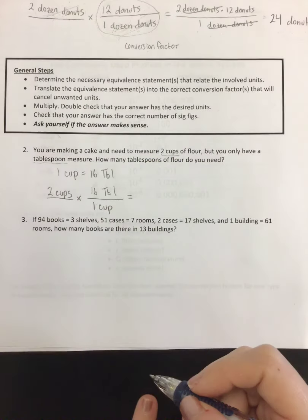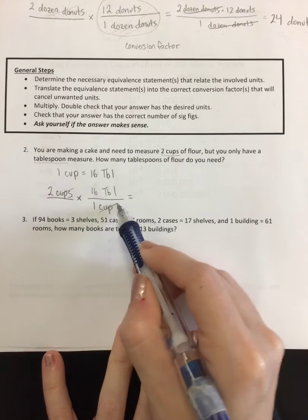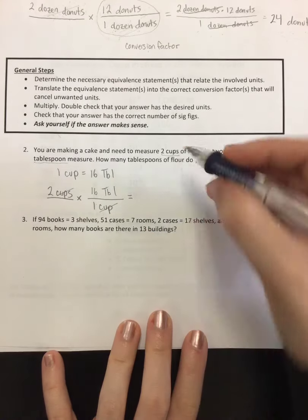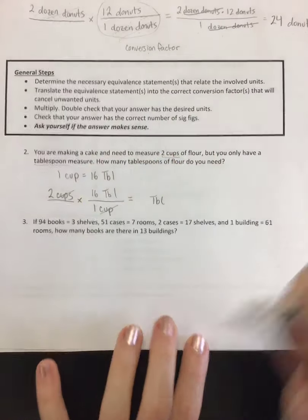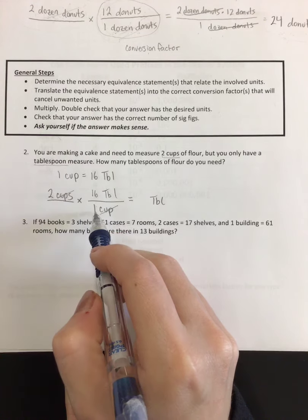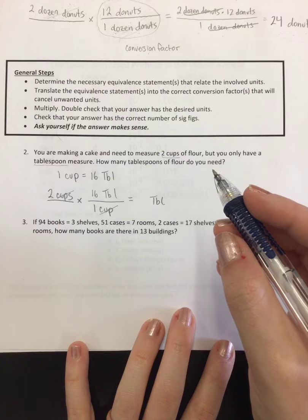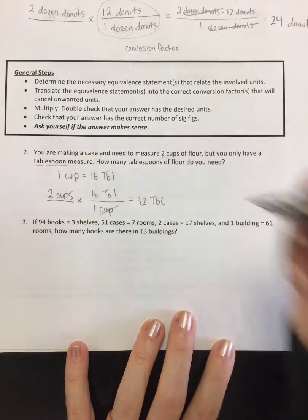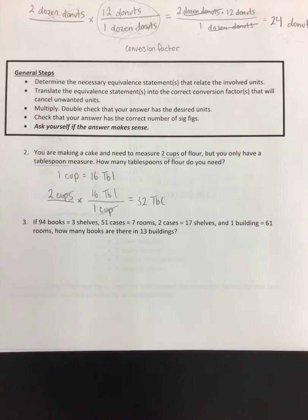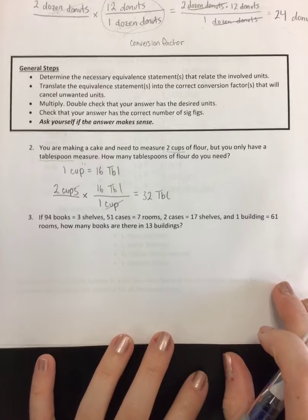So I can go through now and I can multiply this all out. I know that cups on top will cancel with cups on the bottom and leave me with units of nothing but tablespoons. And right here with my numbers, I have 2 times 16 divided by 1, which leaves me with 32. So your final answer for this one is 32 tablespoons. Not too bad, but a little bit harder figuring out your equivalent statement there, right?